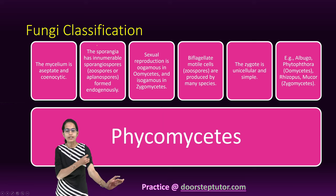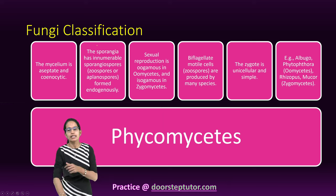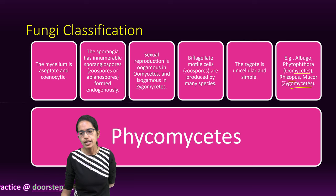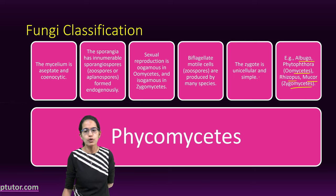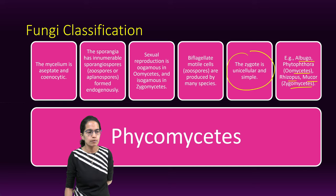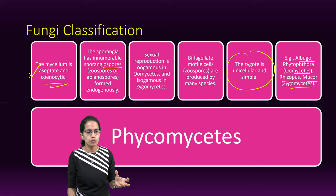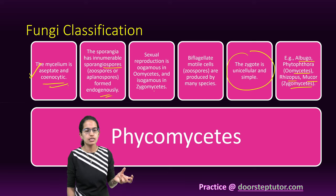Coming on to Phycomycetes. The examples are Oomycetes or Zygomycetes, such as Rhizopus, Mucor, or Albugo. The zygote is unicellular and simple. The mycelium is aseptate and coenocytic. The sporangia has numerous sporangiospores which are formed within, so they are endogenous in nature.